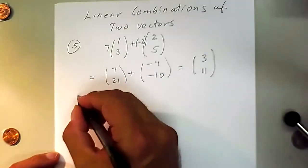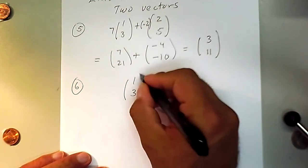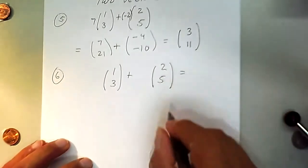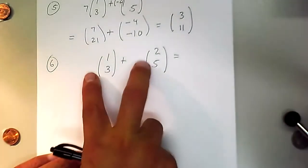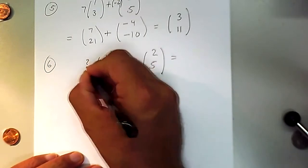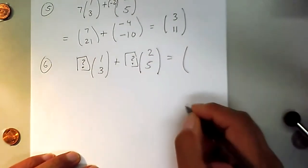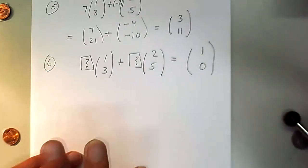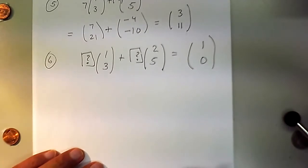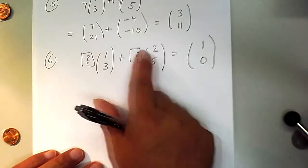One interesting problem — a very central and essential problem in linear algebra — is: given two vectors (1,3) and (2,5), can we combine them to produce a target vector, like (1,0)? That is, can we find scalars such that their linear combination equals (1,0)? We use the analytic method: assume there is a solution. If we multiply (1,3) by a and (2,5) by b, we get (a + 2b, 3a + 5b), and this should equal (1, 0).